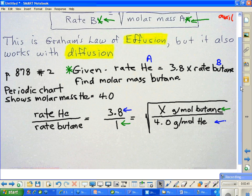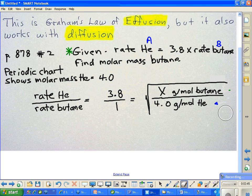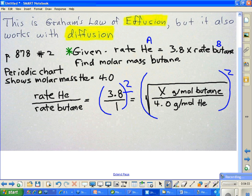Now we're ready to actually solve the problem. What we can do is square both sides of this equation. When we square this side, we get rid of the radical. When we square this side, the only thing we really have to worry about is that 3.8.